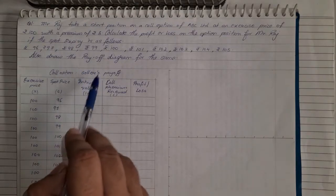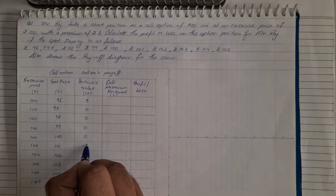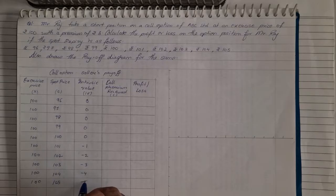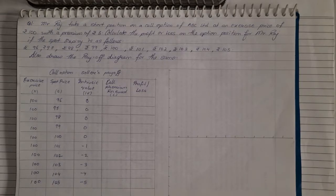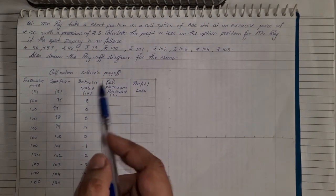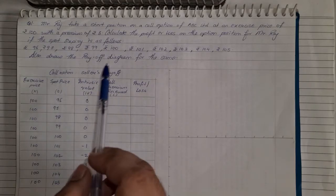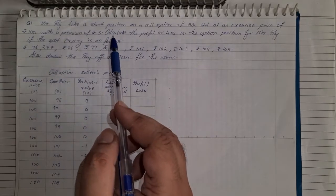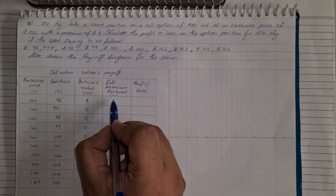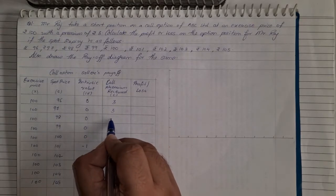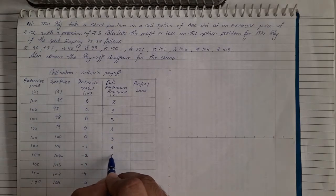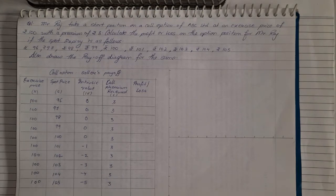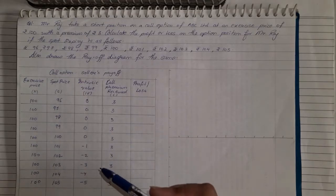Thereafter, whenever there is a seller's payoff, there will be the negative difference between exercise price and spot price. So there is a difference of 1, so we note negative 1, negative 2, negative 3, negative 4, and negative 5. That's the key difference between buyer's payoff and seller's payoff — under buyer's payoff it was a positive difference, but in seller's payoff it will be a negative difference. Now for call premium: since the exercise price is 100 with a premium of Rs. 3, and since we are taking a short position — we are selling — we will receive the premium, so it will be written as positive 3 under each and every case.